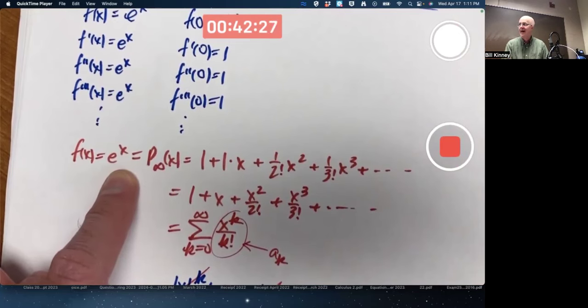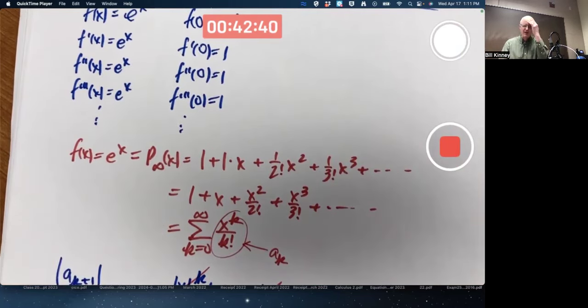Why is it actually equal e to the x? I mean, it seems reasonable. I mean, we're matching up all the derivatives at zero. Why shouldn't it equal e to the x? Well, if you think about it a little harder, you're only matching up the derivative values at one point. Why should that make the functions equal everywhere? It's really because e to the x is a very, very special function. That's really why.